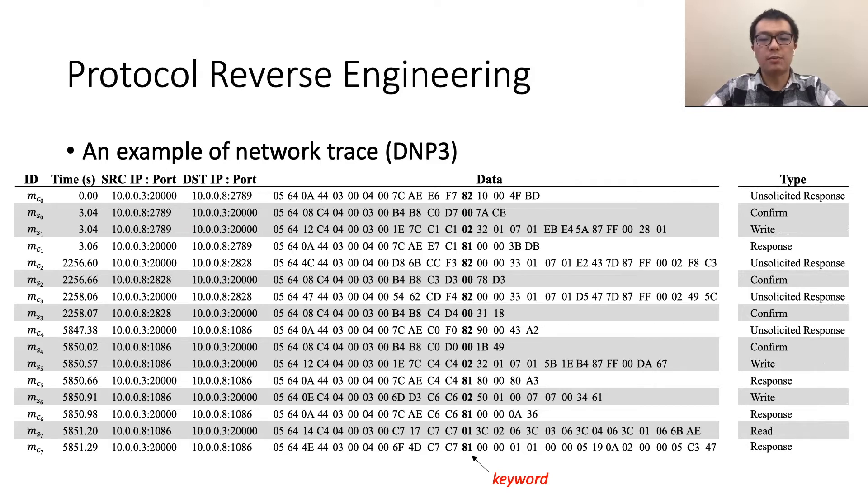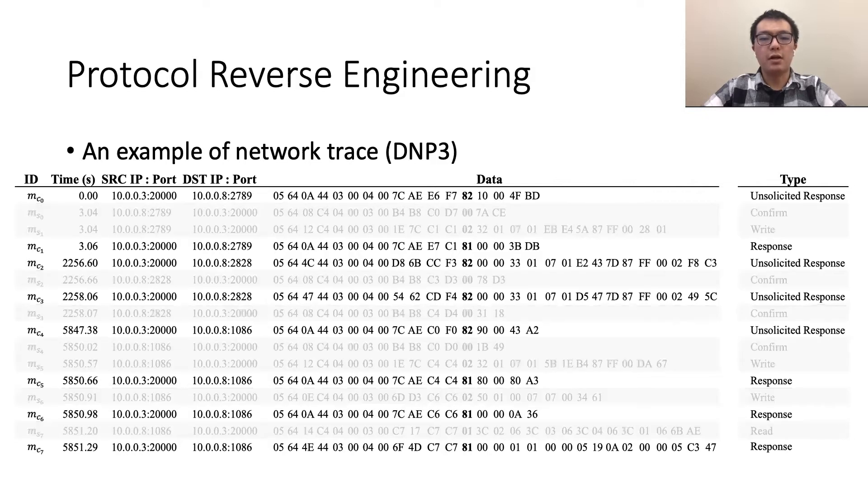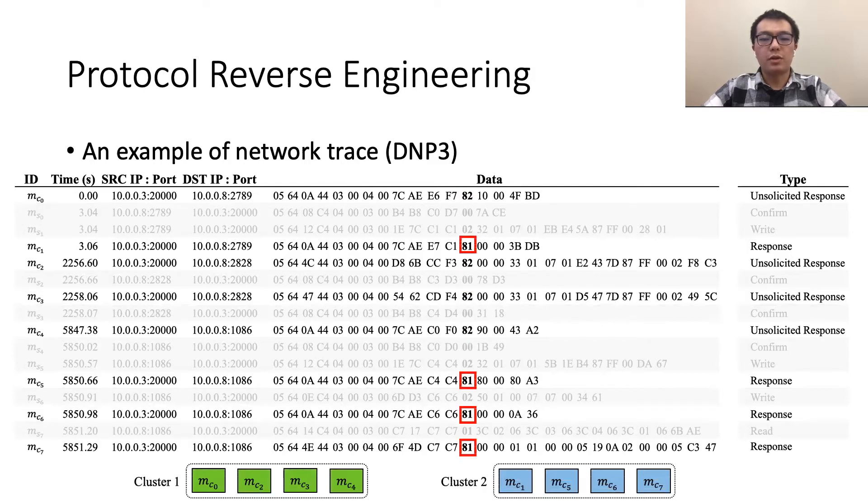The first step is to group messages of the same type into a cluster. The clustering results determine the accuracy of further format and state machine inference. As existing works usually consider messages from different directions separately, we use messages from the client as an example. Here, the ideal clustering result is to get two clusters according to their message types, denoted by values 82 and 81. Next, we will discuss existing techniques and our technique for clustering with the help of this example.